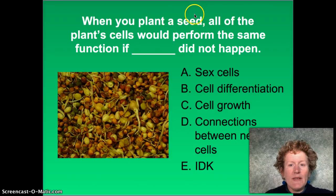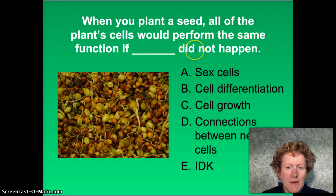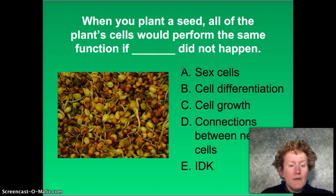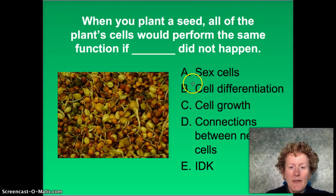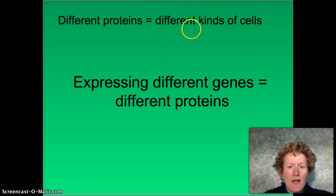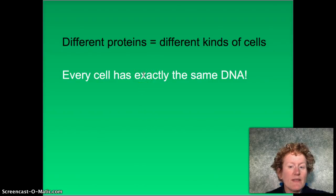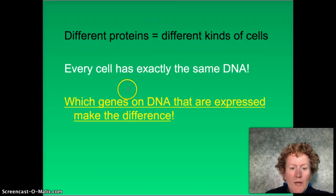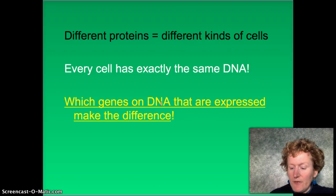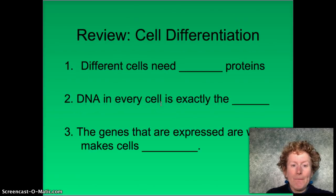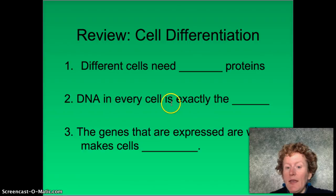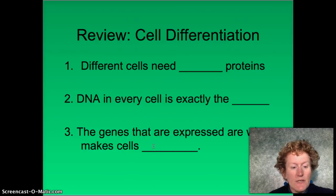If you plant a seed, all the plant cells would perform exactly the same function if cell differentiation did not happen. Let's review cell differentiation: different cells need different proteins; DNA in every cell is exactly the same; the genes that are expressed are what makes the cells different. Different genes expressed means different cells.